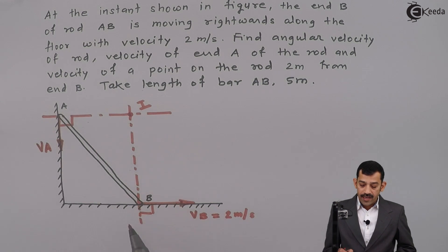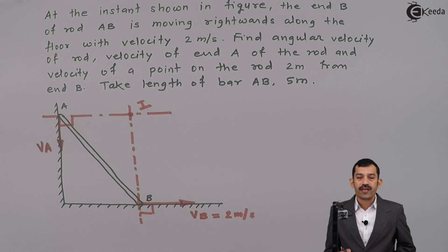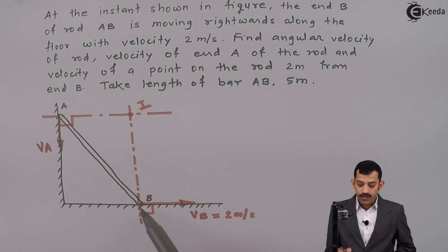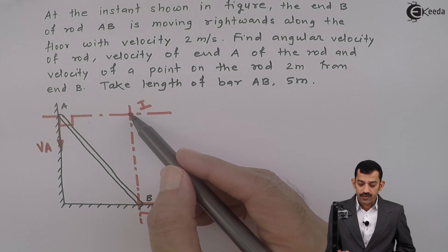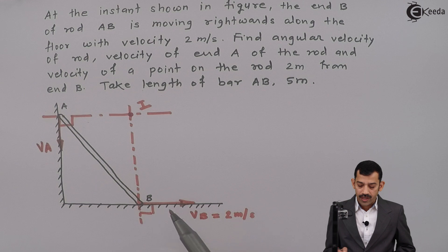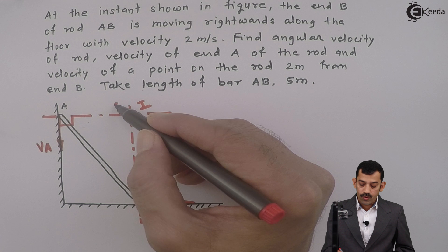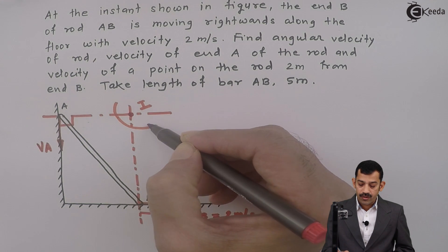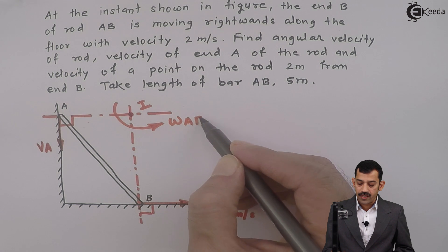Assume IAB is a triangular plate and it rotates about point I. VA is downward and VB is rightward. From this, we will decide the direction of angular velocity of rod AB. Assuming this as a triangular plate hinged at point I, with VB rightward and VA downward, the direction of omega — angular velocity — is definitely anticlockwise. I will represent this as omega AB.